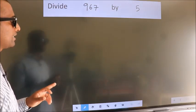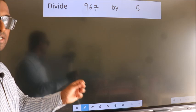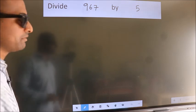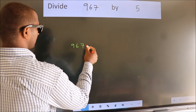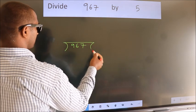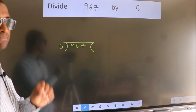Divide 967 by 5. To do this division, we should frame it in this way. 967 here, 5 here. This is your step 1.